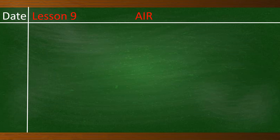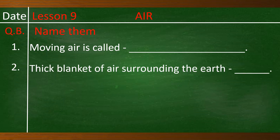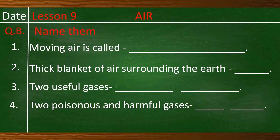On the next page, on the left-hand side, write the date. Lesson 9, Topic. Below, write Question B: Name them. Number 1: Moving air is called blank. Number 2: The thick blanket of air surrounding the earth. Number 3: Two useful gases. Number 4: Two poisonous and harmful gases. Write the answers and then I will discuss them.